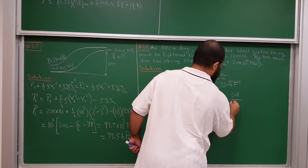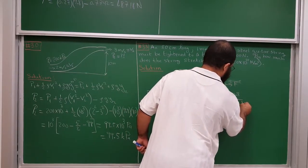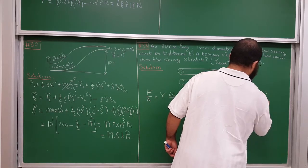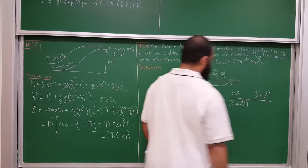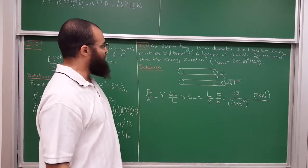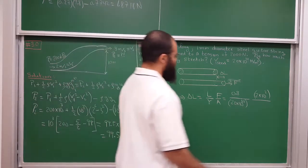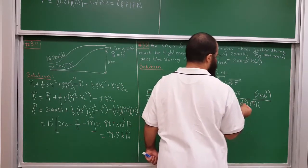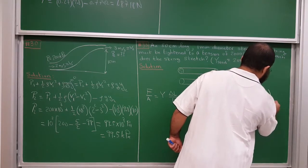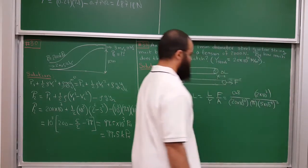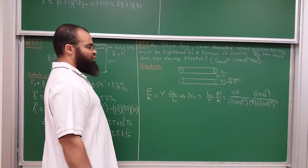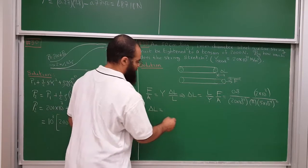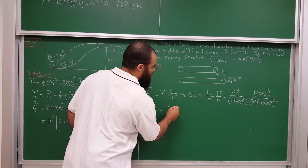The area is πr². The diameter is 1 mm, so the radius is 0.5 mm = 5 × 10⁻⁴ meters. Plugging in: Δl = (0.8 × 2 × 10³) / (20 × 10¹⁰ × π × (5 × 10⁻⁴)²). Simplifying the numerator: 0.8 × 2 = 1.6, giving 1.6 × 10³ in the numerator.